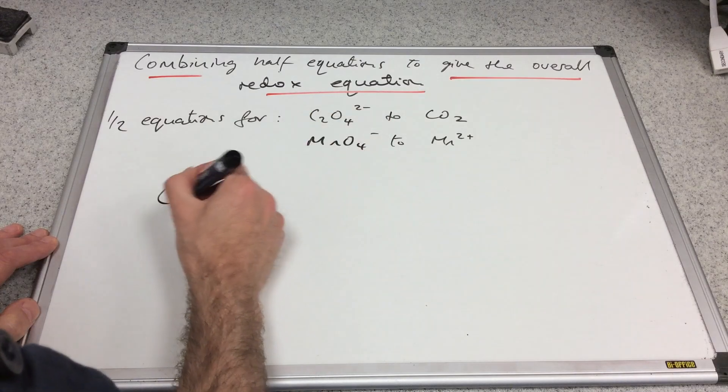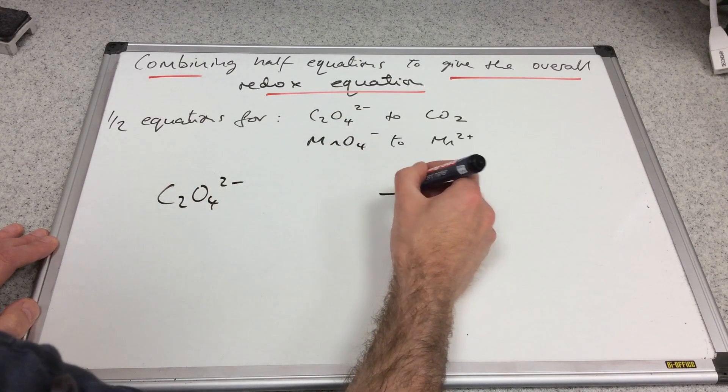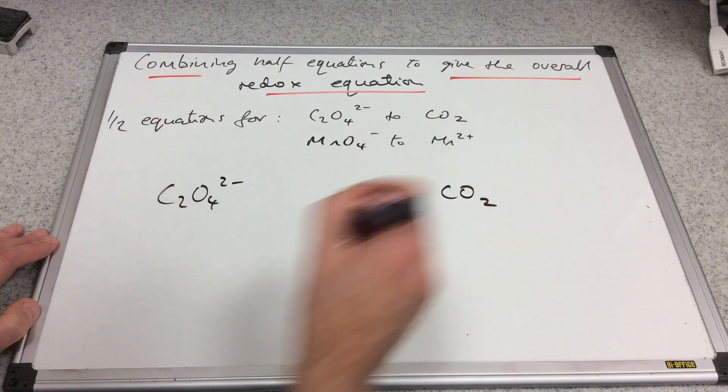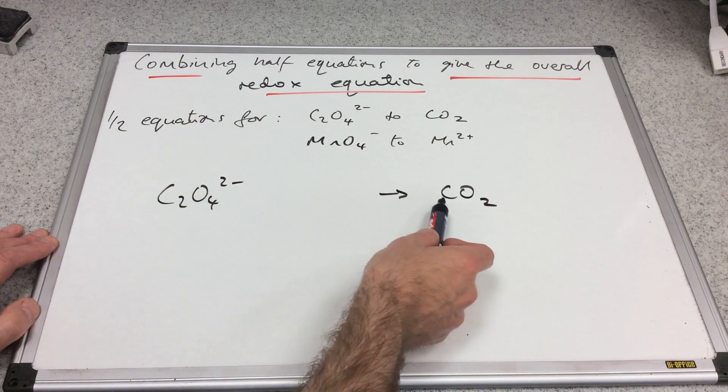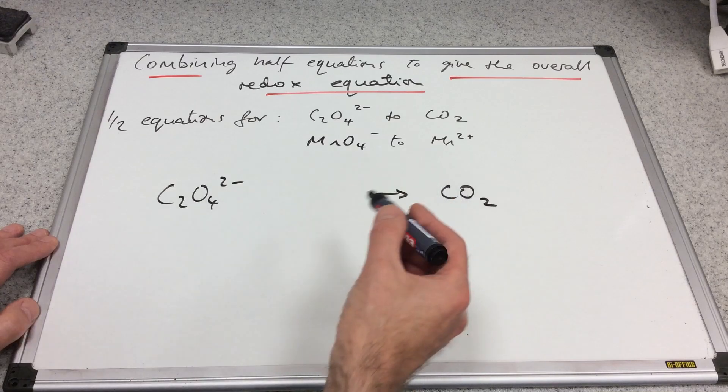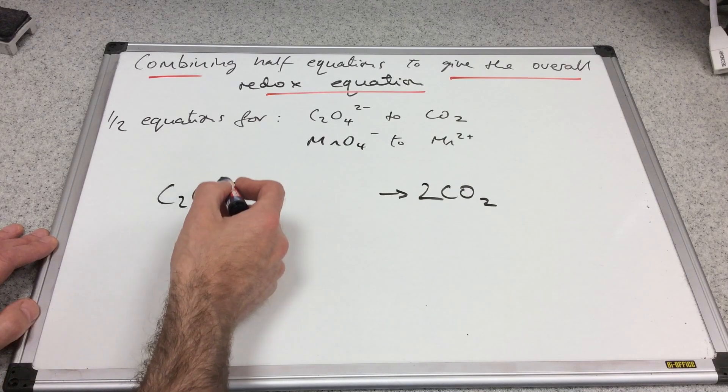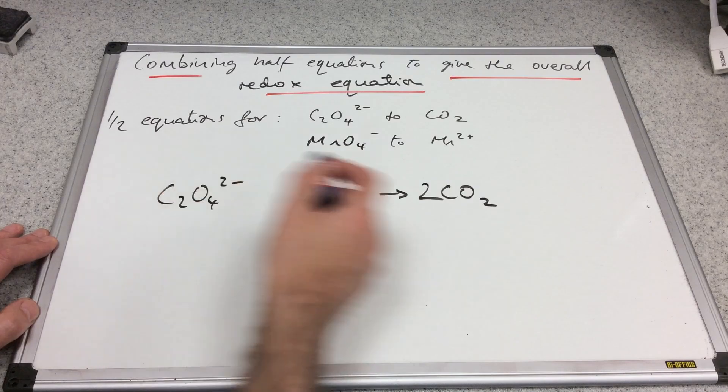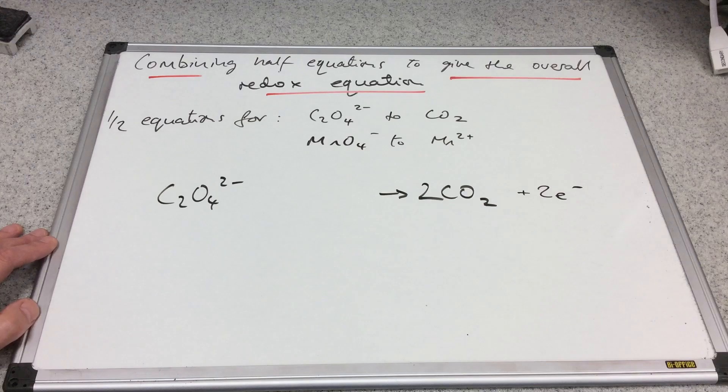Let's start off. What do we know? We know that C2O4²⁻ is turned into CO2. The atoms don't balance - we've got two carbons, one carbon, four oxygens, two oxygens. So obviously a two there will sort the atoms out. We don't need any H2O or H+ in this one. Charge-wise, we've got a two minus charge on the left, no charge on the right, so obviously two electrons are required there.